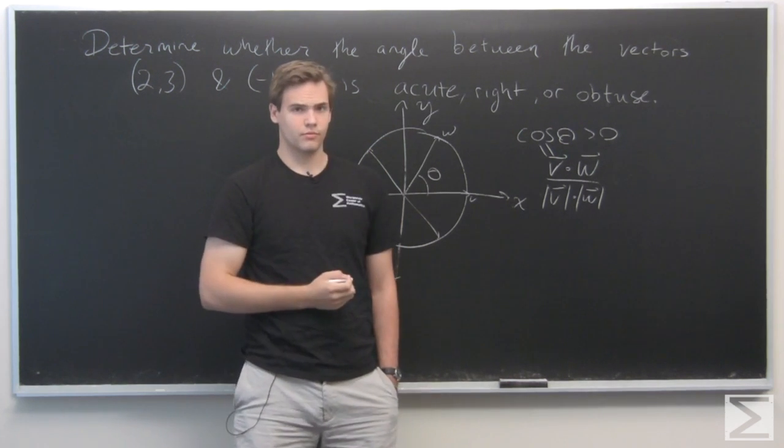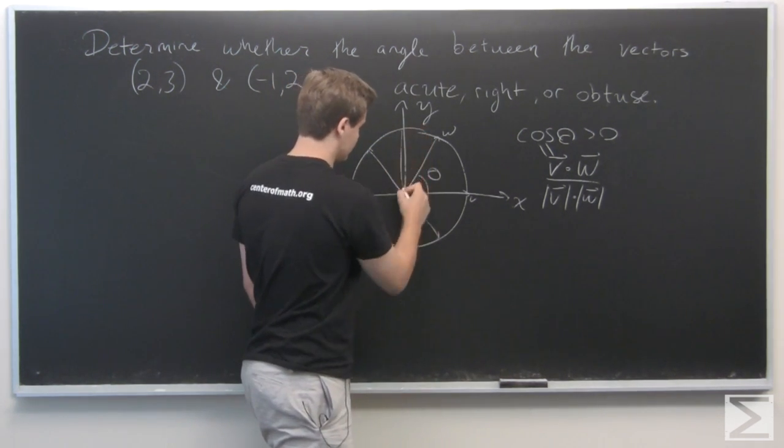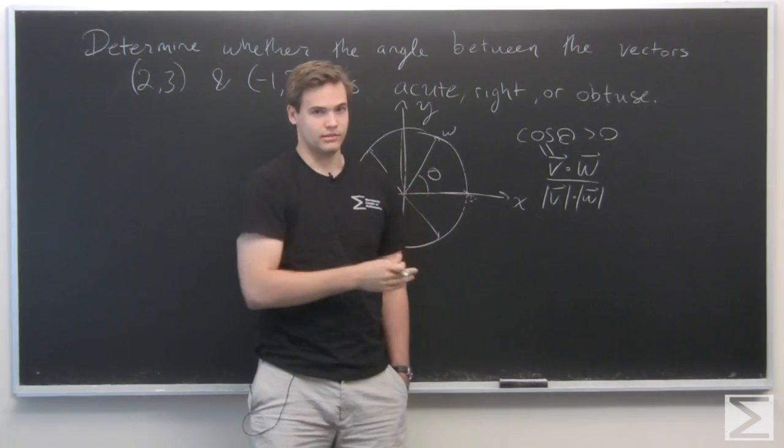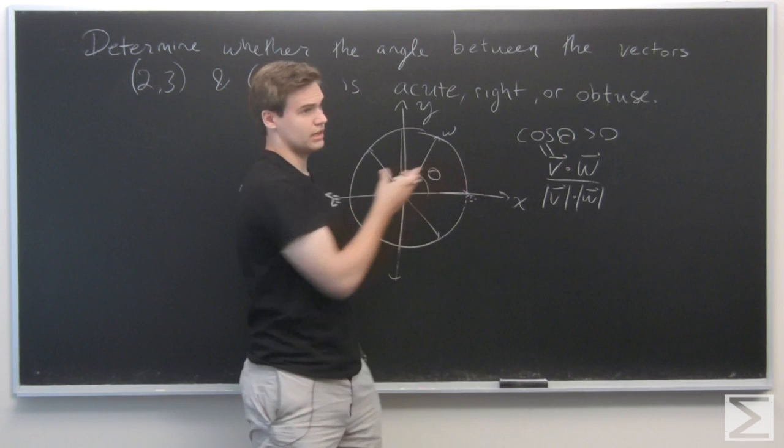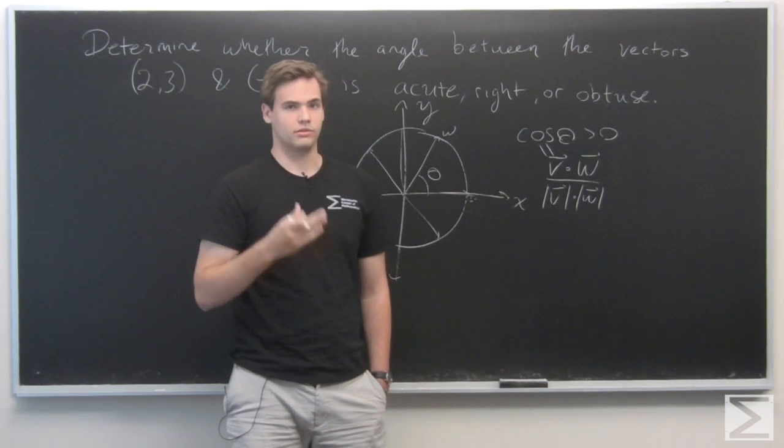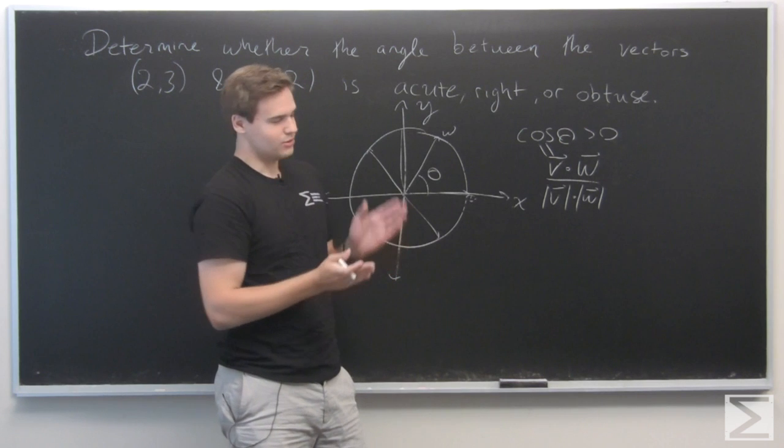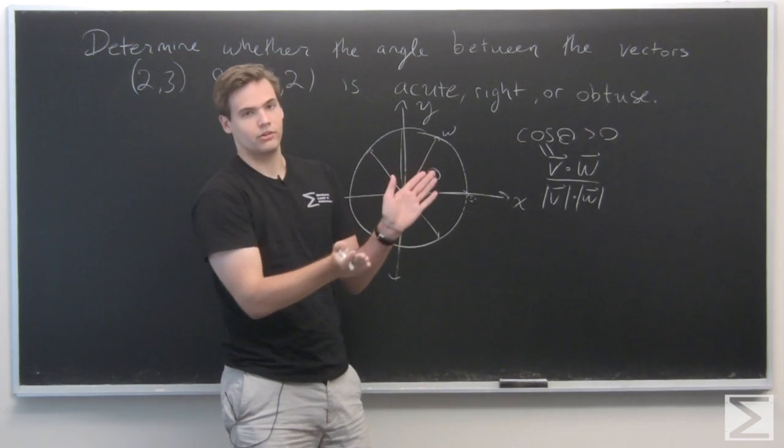it's obtuse. And when the two vectors are perpendicular, that is, cosine of theta is zero, we know that the two angles meet at right angle, or the two vectors are orthogonal to each other.